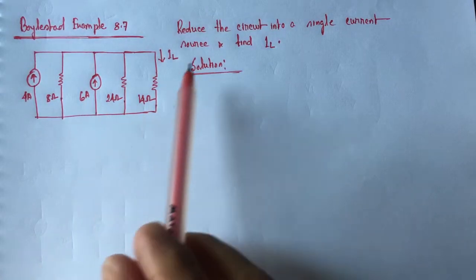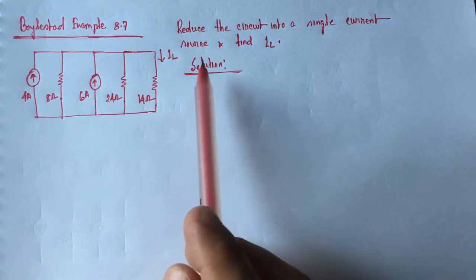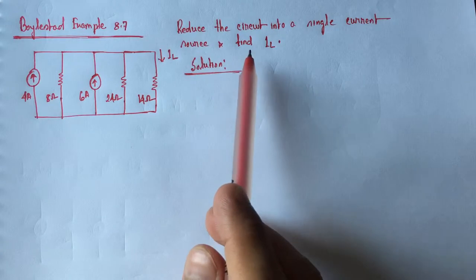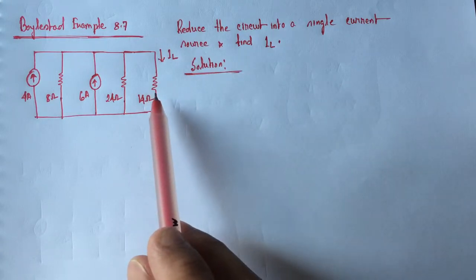This is a multi-current source problem. Here we have to reduce the circuit into a single current source and we have to find out the current IL which is flowing through this 14 ohm resistance.